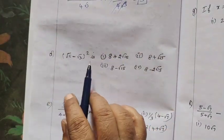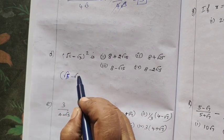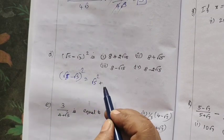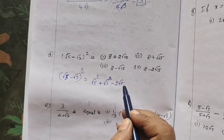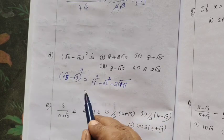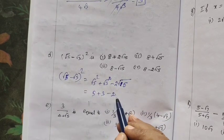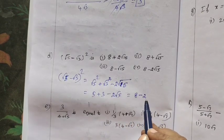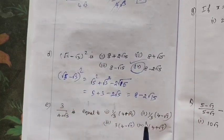For (root 5 minus root 3) whole squared, use the identity (a - b)² = a² + b² - 2ab. So root 5 squared plus root 3 squared minus 2 times root 5 times root 3 gives 5 plus 3 minus 2 root 15, which equals 8 minus 2 root 15. So option 4 is the correct answer.